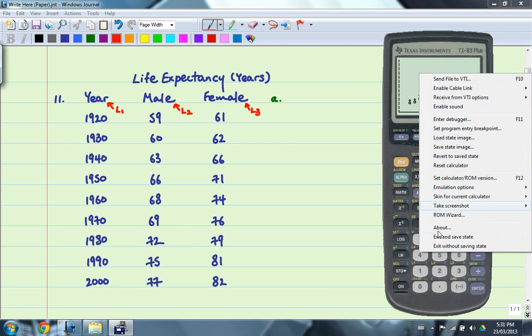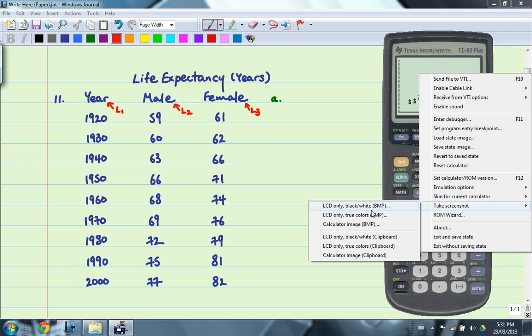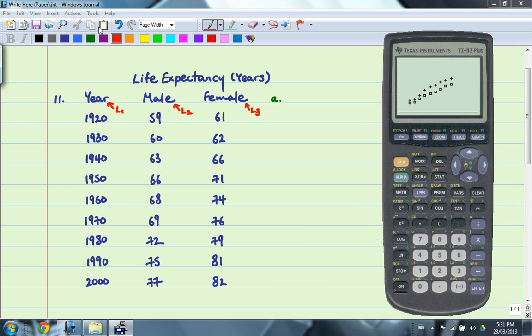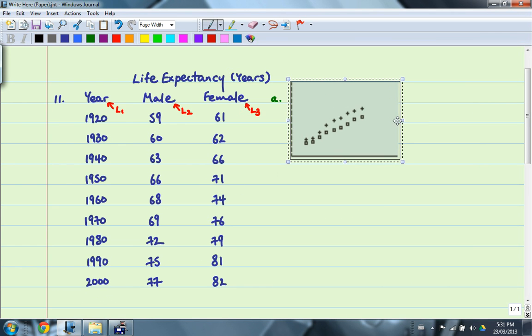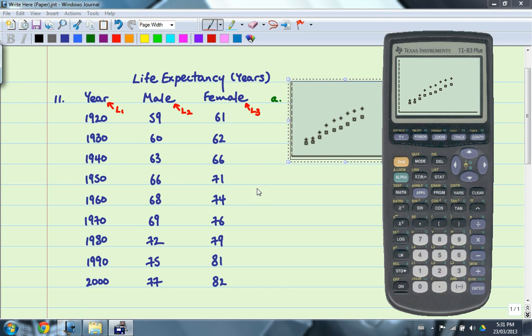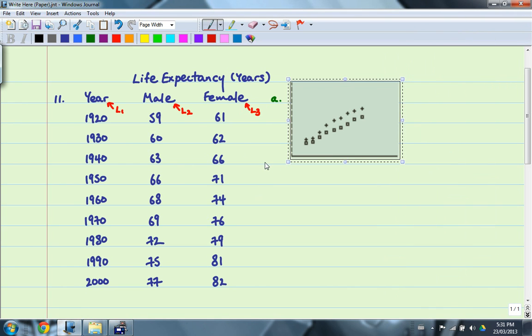So I'm going to go ahead and take a screenshot of that. I'm going to paste. I'm going to try to make it look pretty good. I think that's okay. So that's the end of part one. It says to create a scatterplot.